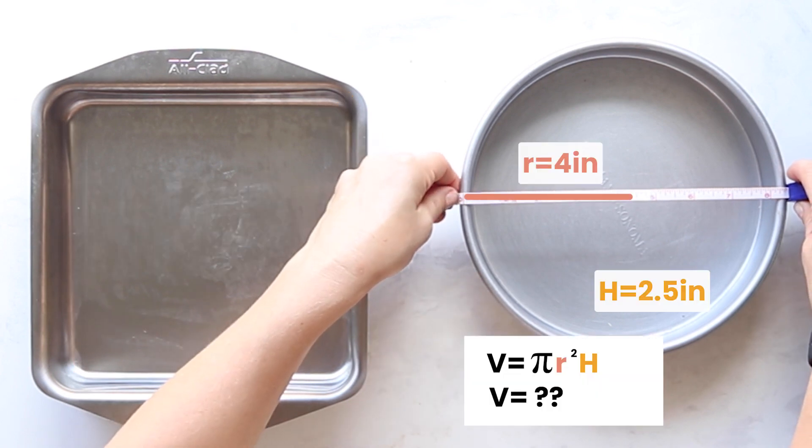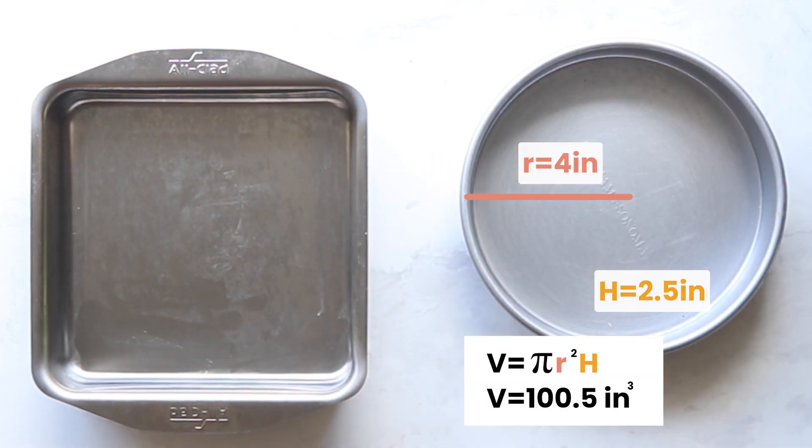If you have a circular dish, you can get the radius by taking the diameter, splitting it in half, getting the height, and then using that formula.